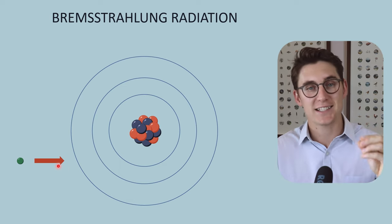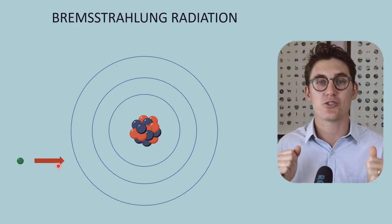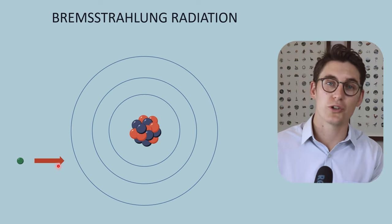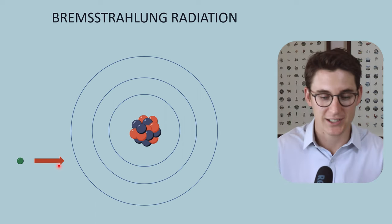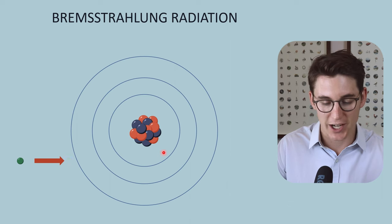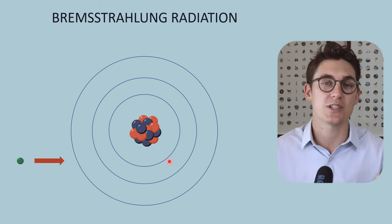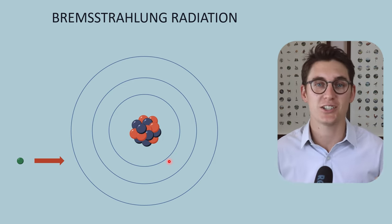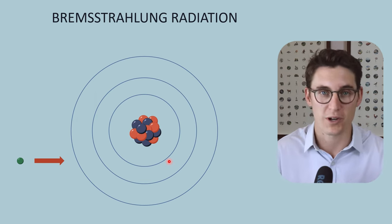I've removed the electrons from this diagram to avoid confusion. Bremsstrahlung radiation — and this is really important to remember — is the attractive force between this electron and the positive nucleus of our target. Bremsstrahlung in German means 'braking,' and you'll see why that is used to describe this type of radiation. This electron is coming in at a specific kinetic energy and it will experience an attractive force between the positive nucleus and that negative electron. As it gets attracted to that nucleus, it will slow down and change direction. Like driving a car and turning — the car slows as we turn. That loss in kinetic energy is then released in the form of Bremsstrahlung radiation.